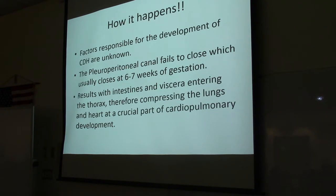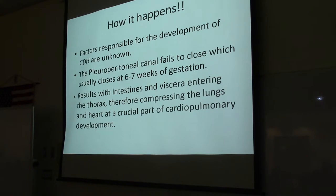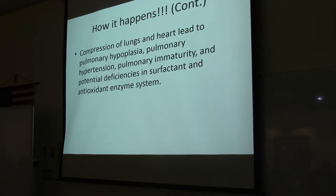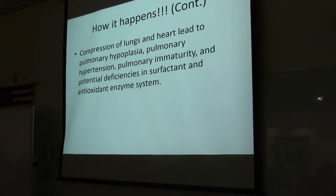The factors responsible for the development of congenital diaphragmatic hernia are unknown, but the pleural peritoneal canal fails to close at about six to seven weeks of gestation, resulting in the intestines entering the thorax. Compression of the lungs and heart leads to pulmonary hypoplasia, pulmonary hypertension, pulmonary immaturity, and also deficiencies in the surfactant and antioxidant enzyme system. The antioxidant enzyme system is how the immune system keeps free radicals in check.